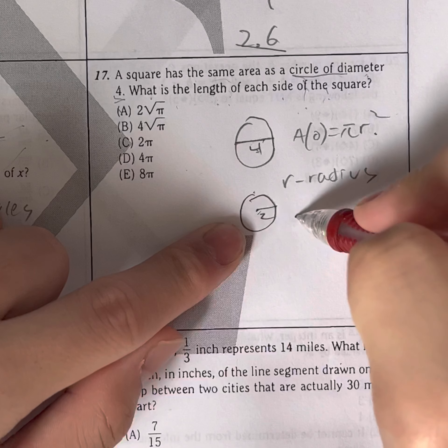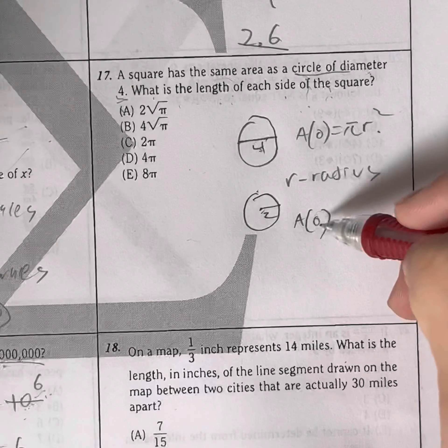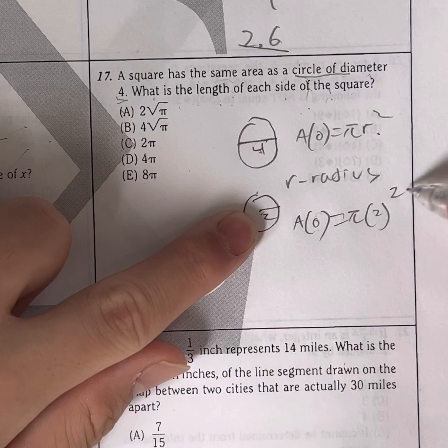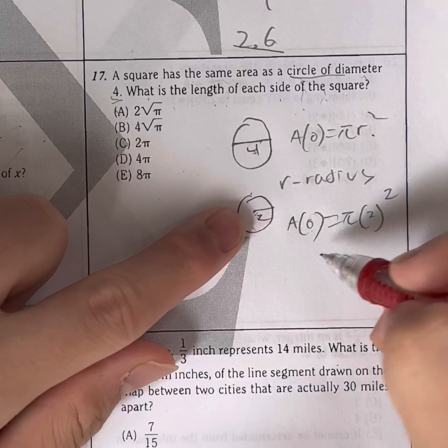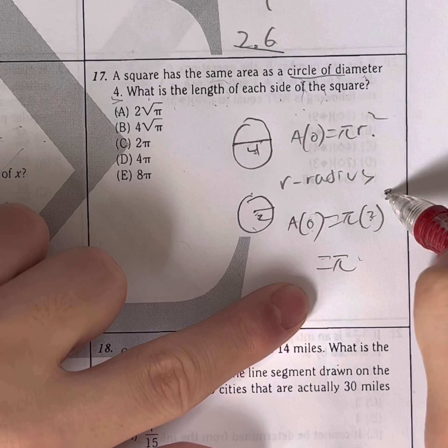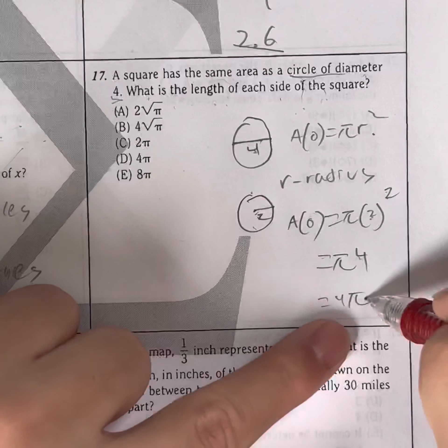We plug that into your equation. So the area of our circle, this is representing a circle. That's why it's a circle shape. It's equal to pi times 2 squared because the radius is 2. So the area is equal to pi times 2 times 2, 2 to the second power, or 2 times 2, which is 4, or 4 pi. So that's the area of your circle.